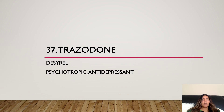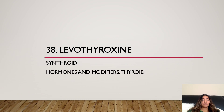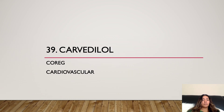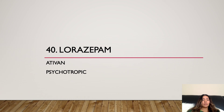Number thirty-seven: Trazodone, brand name Desyrel, psychotropic antidepressant. Number thirty-eight: Levothyroxine, brand name Synthroid, hormones and modifiers, thyroid. Number thirty-nine: Carvedilol, brand name Coreg, cardiovascular. Number forty: Lorazepam, brand name Ativan, psychotropic.